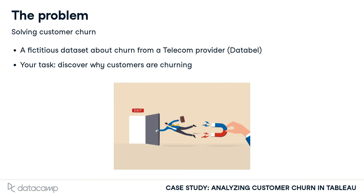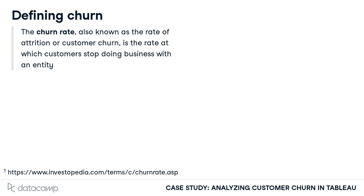But what is churn exactly? A good definition is the one from Investopedia. The churn rate, also known as the rate of attrition or customer churn, is the rate at which customers stop doing business with an entity.